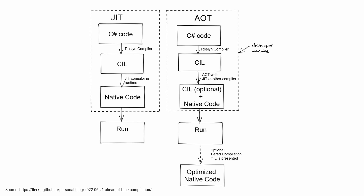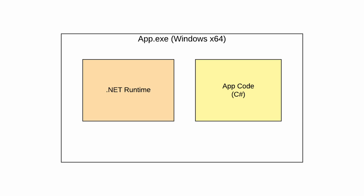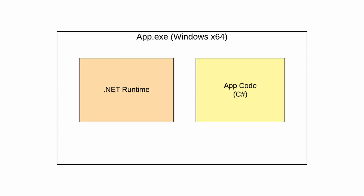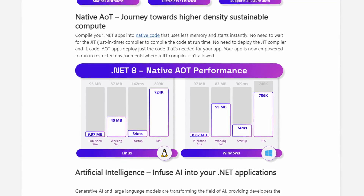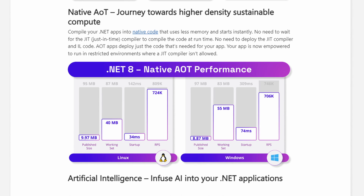Ahead-of-time compilation is a .NET feature that can have a significant impact on the overall performance of your applications. It compiles code ahead of time into machine code instead of intermediate language or IL code, getting rid of the just-in-time or JIT compiler. Basically, we're shifting part of the work from the client machine to compile time. AOT apps contain the application code and a .NET runtime within a single executable file. The three most important benefits are a reduced memory footprint, improved startup time, and improved battery life. With .NET 8, a sample app had its initial size reduced from 100 MB to 25 MB using AOT.